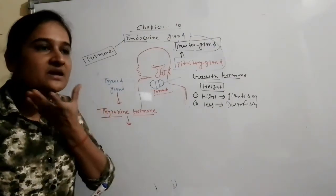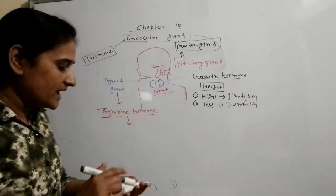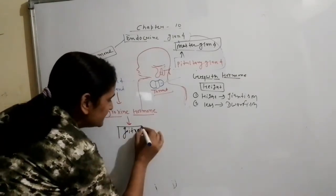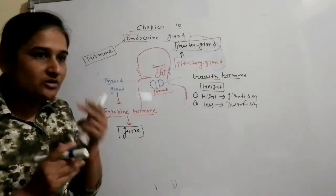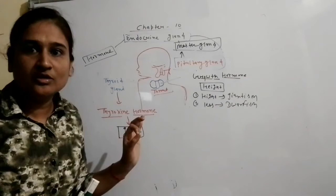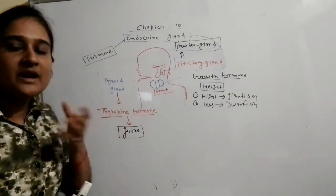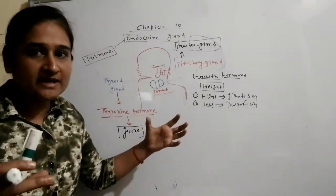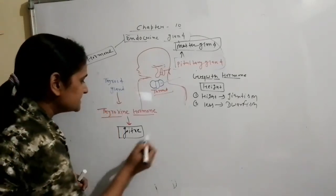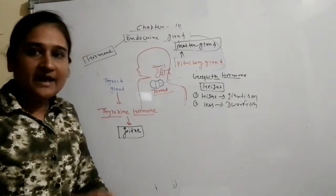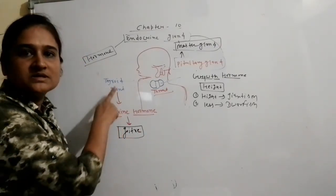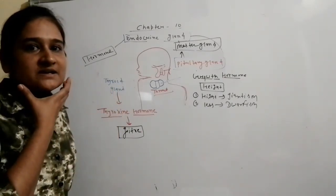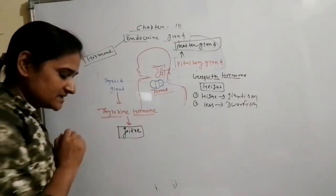Deficiency of the thyroxine hormone causes the neck region to become swollen — the thyroid gland enlarges and swells the neck region. This condition is known as goiter disease.